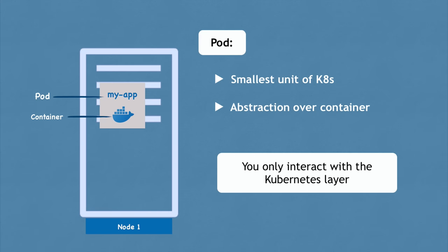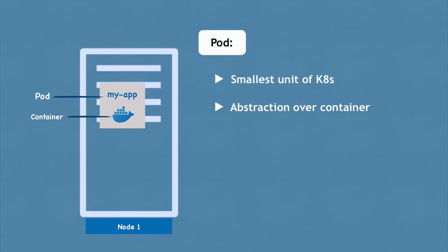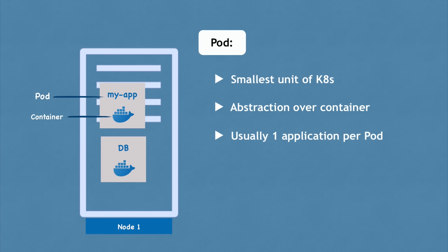We have an application pod — our own application — and that will use a database pod with its own container. An important concept: a pod is usually meant to run one application container inside of it. You can run multiple containers inside one pod, but usually only if you have one main application container and a helper or side service container. You just have one server with two containers running on it and an abstraction layer on top.